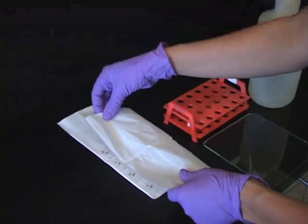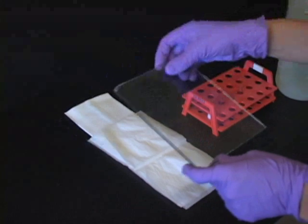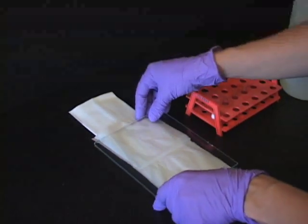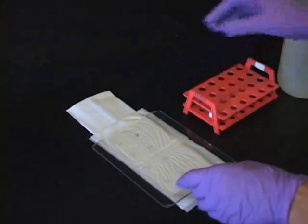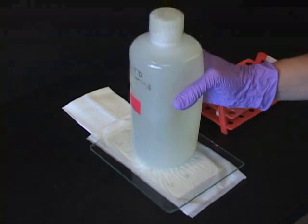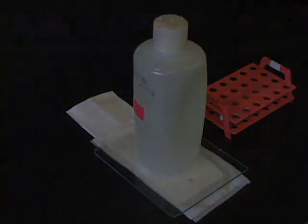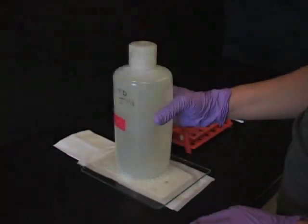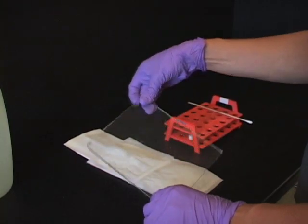Cover slides with kimwipes, a glass plate, and squash by placing a 1 liter bottle of water on top of the glass plate for 5 minutes. Gently remove the bottle, plate, and kimwipes.